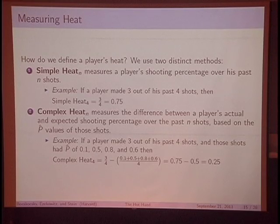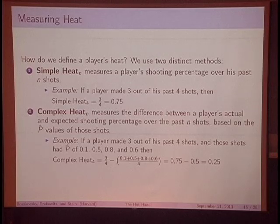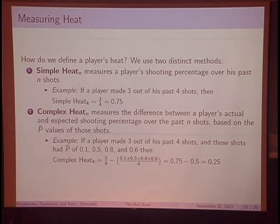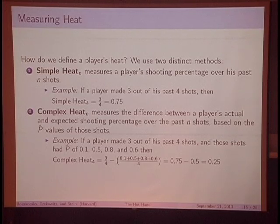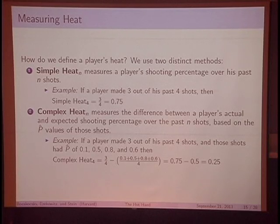The second thing we need is a measure of heat. We come up with two measures. Simple heat sub-n measures a player's shooting percentage over his past n shots — if you've gone three for four, your simple heat sub-4 is 0.75. Complex heat measures the difference between a player's actual shooting percentage over his past n shots versus his expected shooting percentage using our p-hat values. So if you went three for four but were expected to shoot 0.5 based on shot difficulty, your complex heat sub-4 would be 0.25. Anything substantially larger than zero represents a player who is hot in the sense that he is outperforming given how difficult those shots were.